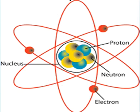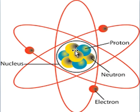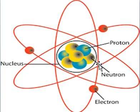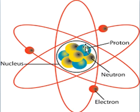Yahan aapko atom ki diagram nazar aa rahi hai. Yahan pe jo mid ka point hai yeh aapka nucleus hai. Yeh aapke protons hai — blue color ki jo balls aapko nazar aa rahi hai yeh aapke protons hai. Along with neutrons — yellow shapes mein iske neutrons nazar aa rahe hai. Kisi bhi atom ki jo nucleus hoti hai, usme protons aur neutrons ek doosre ke saath hote hai.